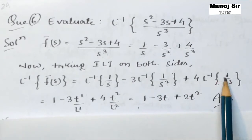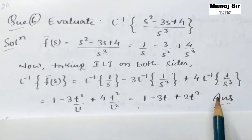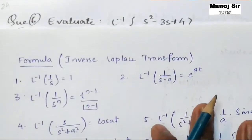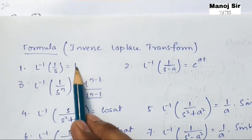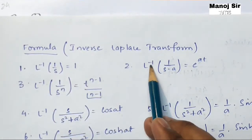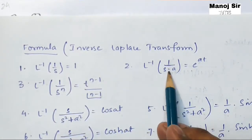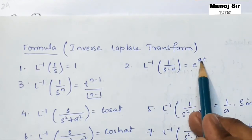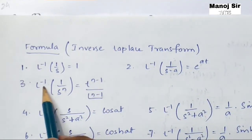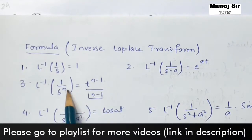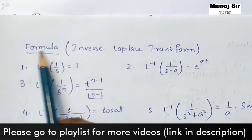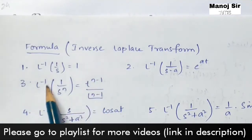We have certain formulas to use. The inverse Laplace transform of 1/s is 1. The inverse Laplace transform of 1/(s - a) is e^(at). And the inverse Laplace transform of 1/s^n equals t^(n-1) / (n-1)!. We are going to use the first and third formulas here.